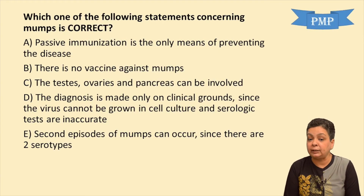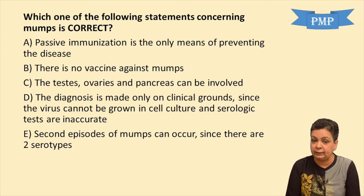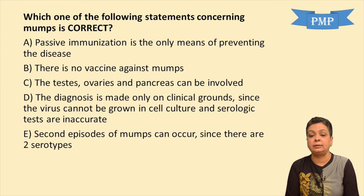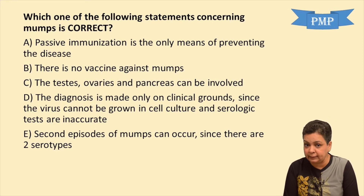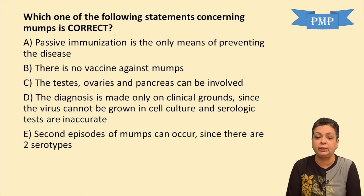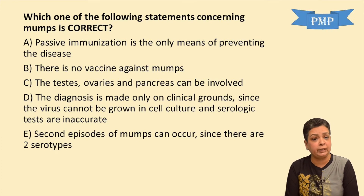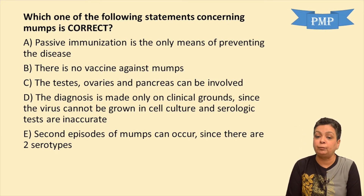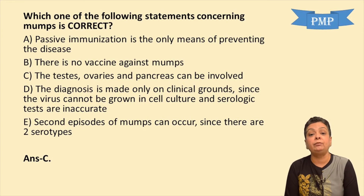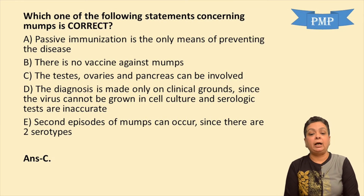Question: Which statement concerning mumps is correct? Passive immunization is the only means — not so, active immunization via vaccine is given. There is no vaccine against mumps — wrong. Testes, ovaries, and pancreas can be involved — yes, epididymo-orchitis, oophoritis, and pancreatitis are commonly seen. Diagnosis can only be made clinically as the virus cannot be grown — wrong, it can be grown on several cell lines. Second episodes can occur since there are two serotypes — wrong, there is only one serotype though there are 12 genotypes. The answer is C.